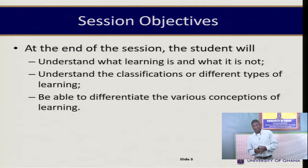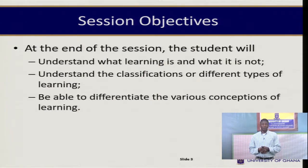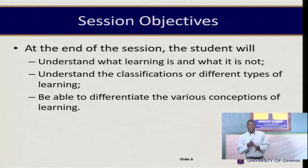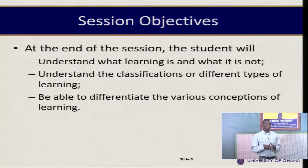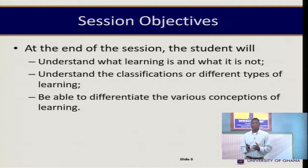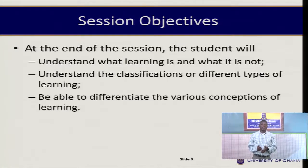So this is the session overview. The objectives for this session — we have three key objectives. We expect that by the time we are done with the session, you will be able to understand what learning is and what it is not. You will get the difference between what learning is in terms of psychology and what it is not. You will also be able to understand the classifications or different types of learning that we talk about in psychology. You will be able to differentiate the various conceptions of learning as far as this session is concerned.